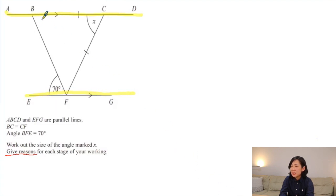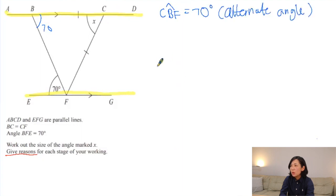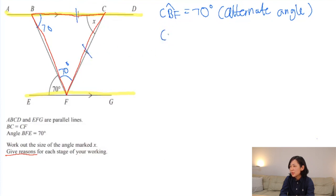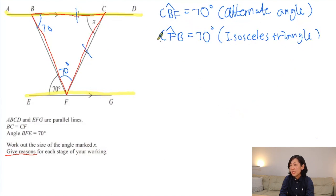Let's begin with the angle we already know — 70 degrees. We can see that these are alternate angles, so angle CBF is 70 because these are alternate angles. Now can you see the big triangle between the pair of parallel lines? This is an isosceles triangle. That's why we can write 70 on the other side: angle CFB is 70 degrees because it is one of the angles of the isosceles triangle.